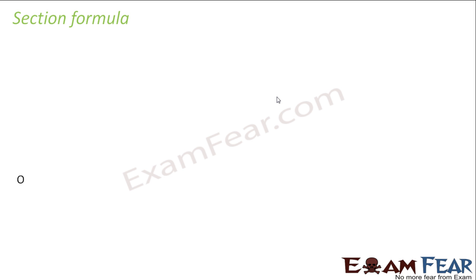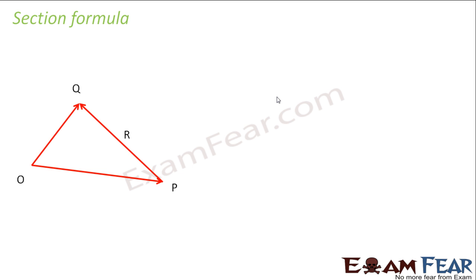So let's see what the sectional formula is. Let's suppose this is my point O and I have two vectors P and Q, and this is my vector PQ. Now I can divide this internally with respect to point R. So this vector is divided internally — QR is one section and RP is another section.